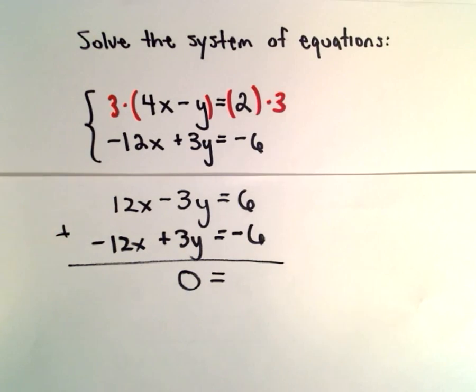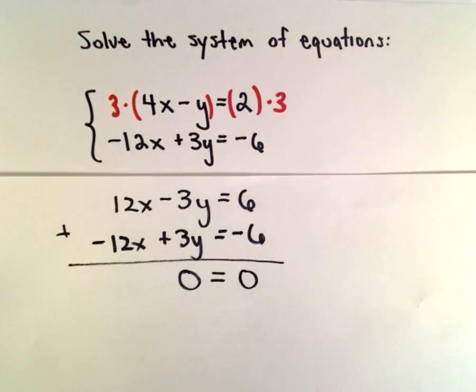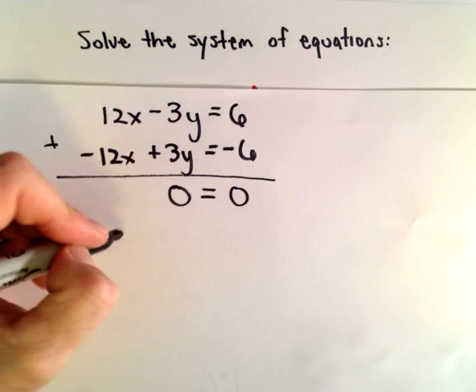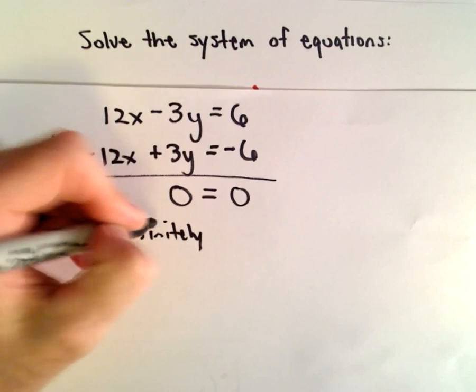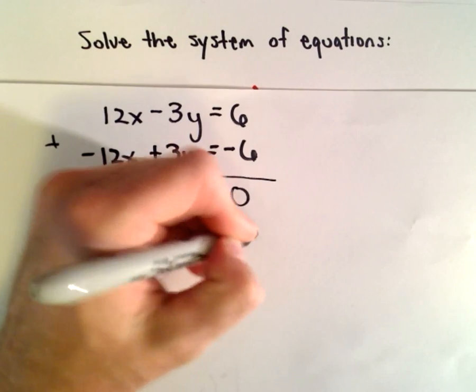On the right side we have 6 minus 6 which is 0, and what this tells me is we have infinitely many solutions.